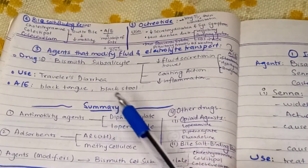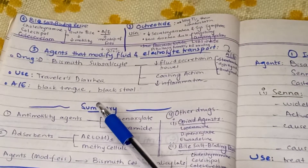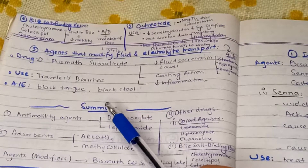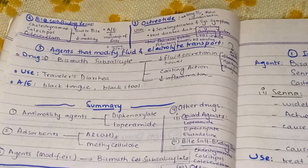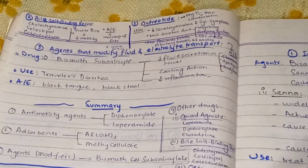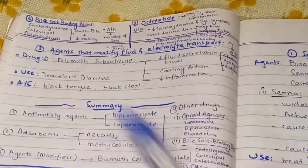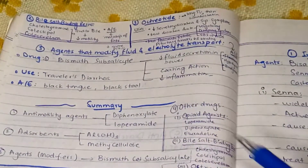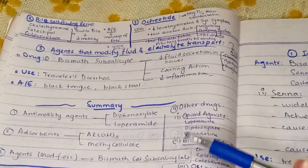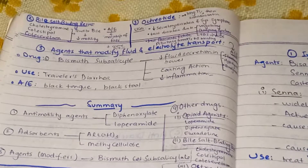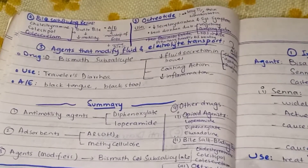The next category is agents that modify the fluid and electrolyte transport. The drug here is bismuth subsalicylate. The mechanism of action is that it decreases the fluid secretion in the bowel, provides coating, and also decreases inflammation. The use of bismuth subsalicylate is for traveler's diarrhea, and the adverse effects include black tongue and black stool.